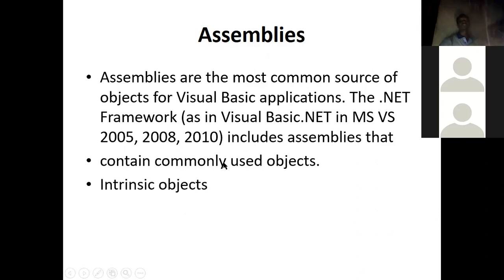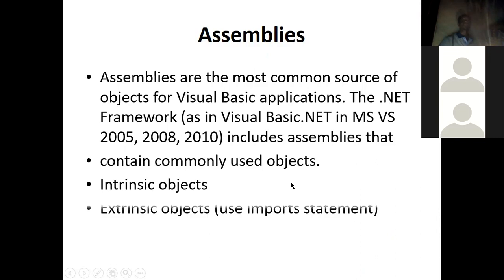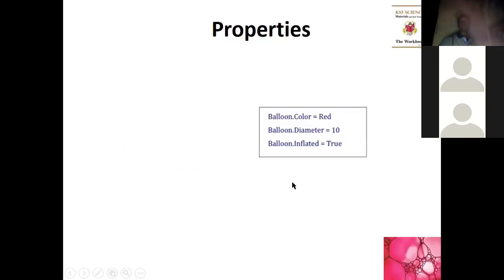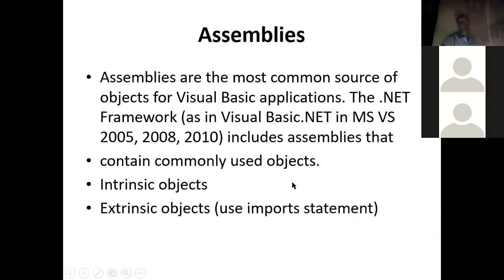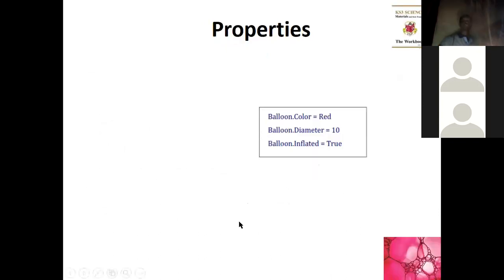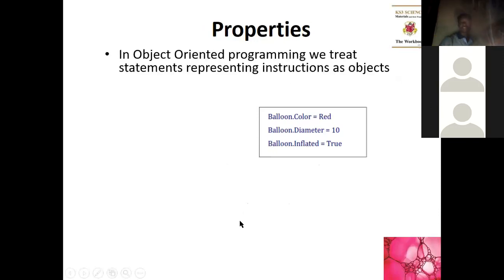Assemblies — the .NET framework is an assembly of objects used in Visual Basic .NET, which is why we use Visual Basic .NET. We commonly use objects available in Visual Basic .NET and create our own. These are called intrinsic and extrinsic objects — objects already available to the programmer, and objects the programmer has to import. That's how modern programming works.